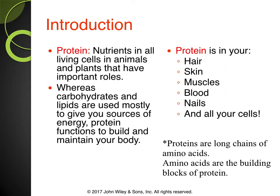Proteins are big, amino acids are small. Amino acids are found in foods and we also have amino acids in our body. It's kind of like Legos or Lincoln Logs — your body can take available amino acids and put them together in different sequence combinations, creating different proteins. These proteins are found in your hair, skin, muscles, blood, nails, and throughout your cells. Whereas carbohydrates and lipids are used mostly for energy, protein functions to build and maintain your body. Remember for the test: protein is the nutrient most important for building and repairing tissues.